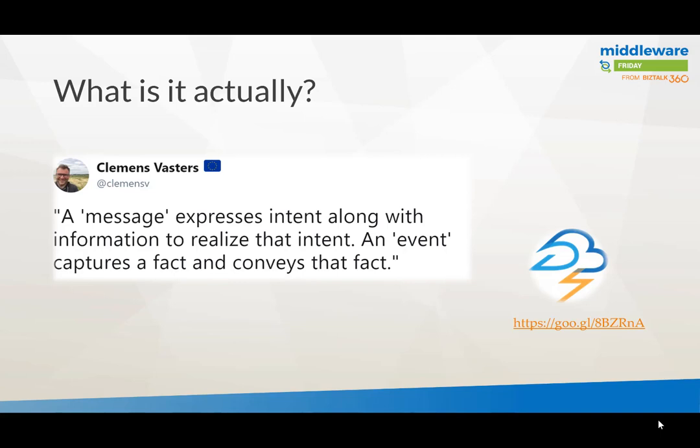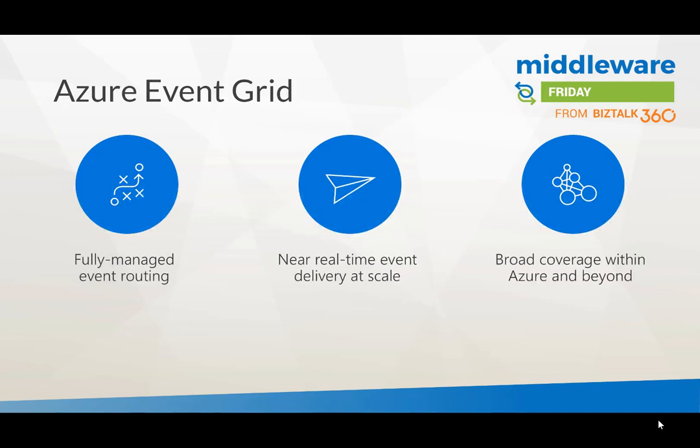A message expresses intent along with information to realize that intent, and an event captures the fact and conveys that fact. Events are things that have taken place in the past. There was also a Twitter storm once Event Grid was released and people were discussing what it is. So let's get into what Event Grid actually is.